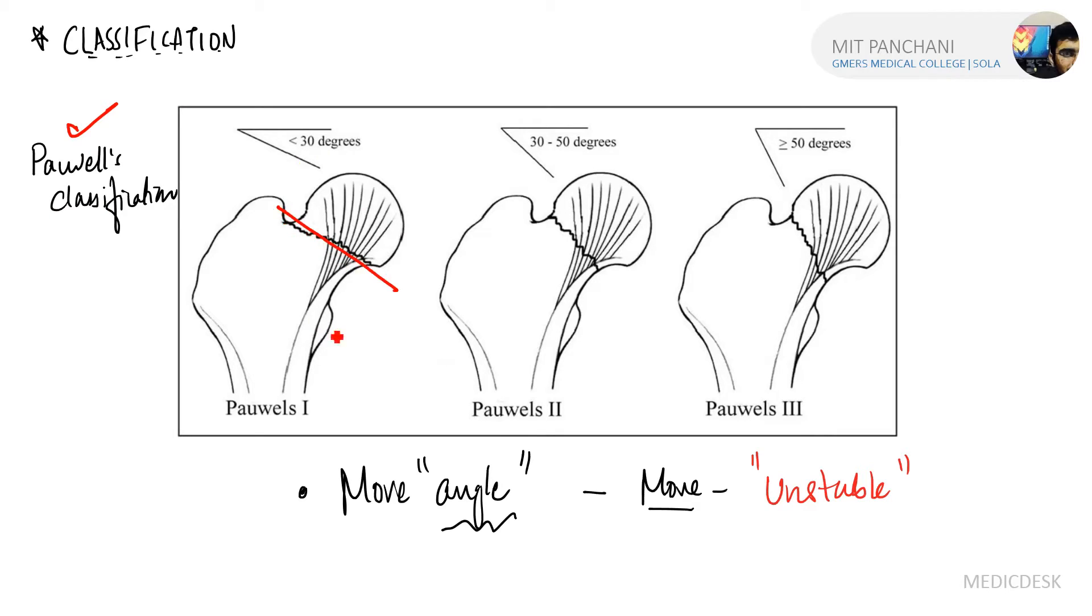This angle is measured, and there are three Powell's classifications: one, two, three. It is less than 30, 30 to 50, or more than 50. This angle number can be different in different books.